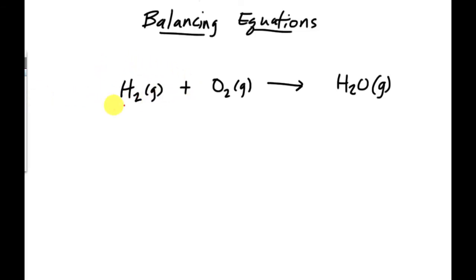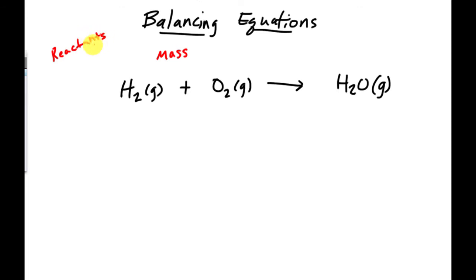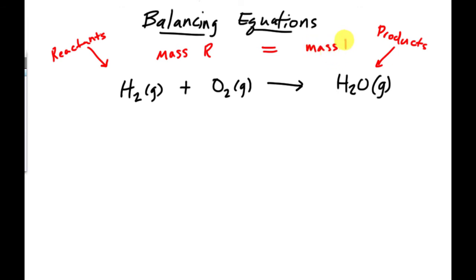Going back to the water reaction — you might notice there are two oxygens on the reactant side but only one in the product. In order for this equation to be properly written, we have to balance it. The reactants, hydrogen and oxygen, are always on the left side of the arrow, and the products — what we're producing — are on the right side. The arrow separates reactants from products.